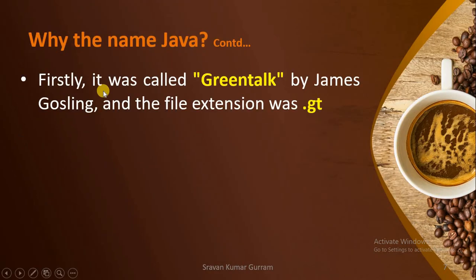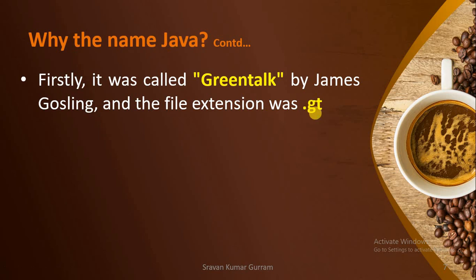Initially, this language was called GreenTag, and at that time the file extension for a GreenTag programming file was .gt. For comparison, if you work with C language you save the file with .c extension, with C++ it is .cpp, and with Python it is .py. In the same way, the file extension of GreenTag was .gt.